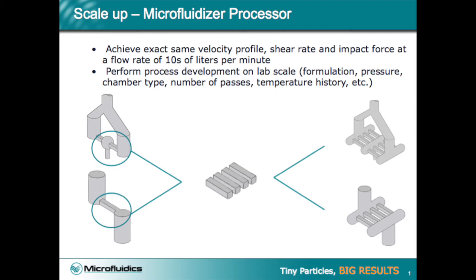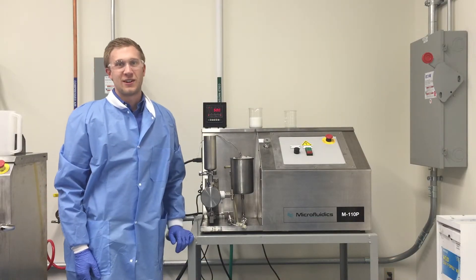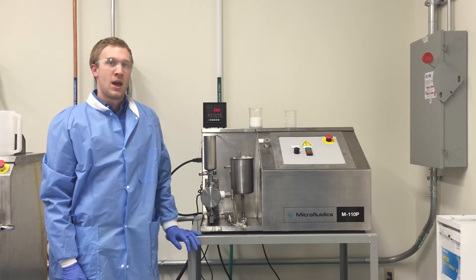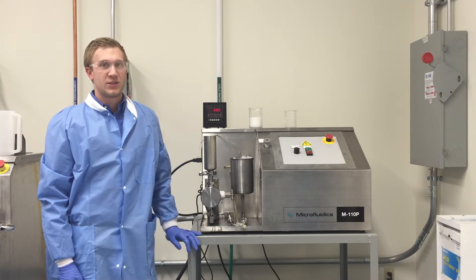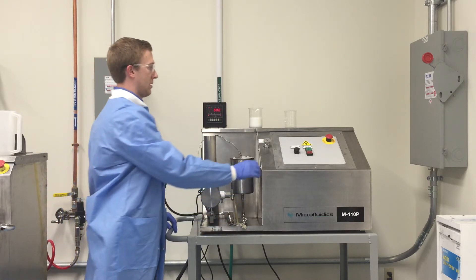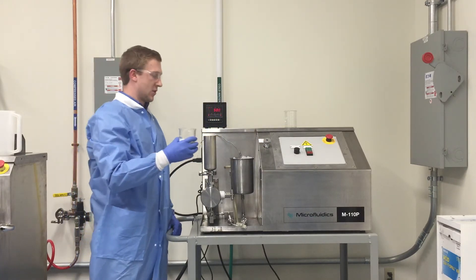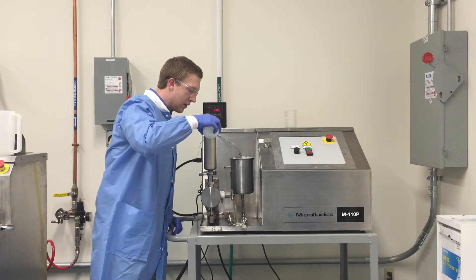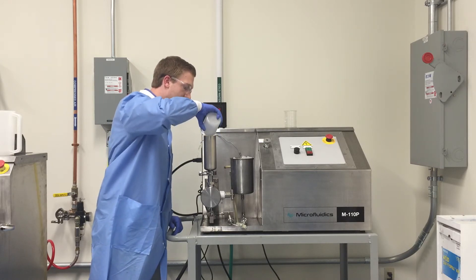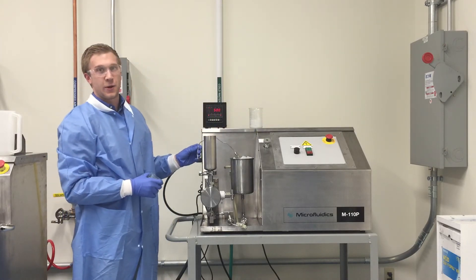Next you will see a demonstration of the squalene nanoemulsion being processed on the M110P microfluidizer processor. Welcome to the Microfluidics Technology Center. Today we're going to process a squalene nanoemulsion through a Y-type chamber. We turn on the microfluidizer, pulling the pre-mix into our inlet. We're going to process four passes at 30,000 psi.